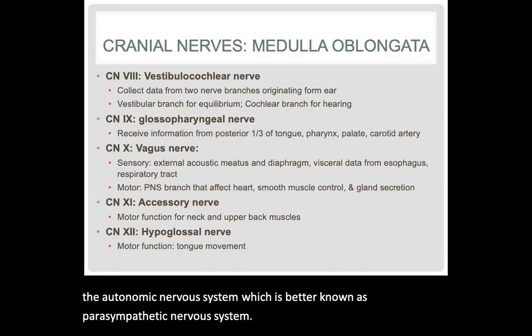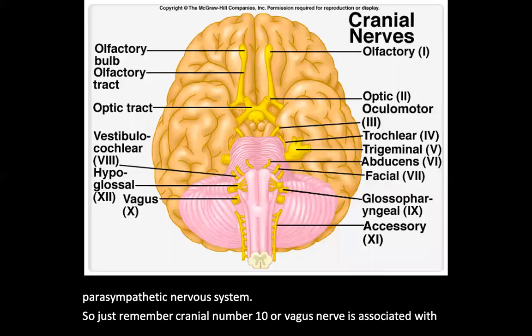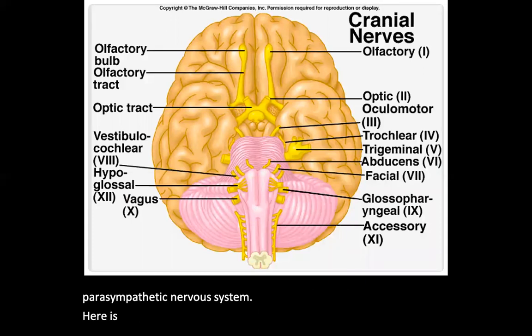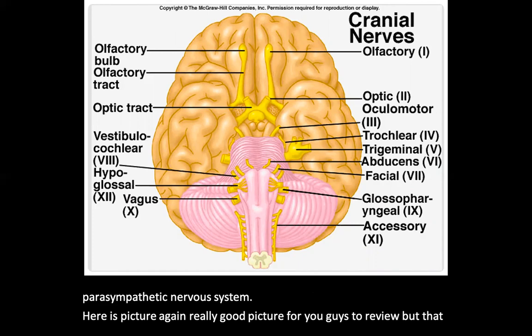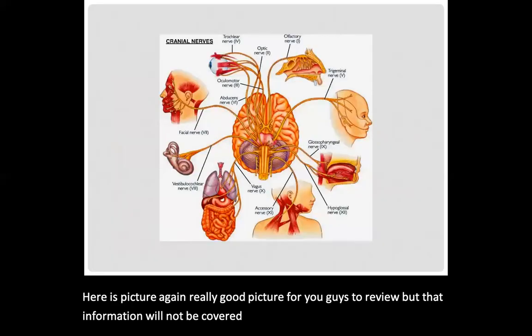Just remember: cranial nerve number 10, the vagus nerve, is associated with the parasympathetic nervous system. Here are pictures — a really good one for you guys to review — but that information will not be covered on your lecture exam. Here is another depiction of the same information.